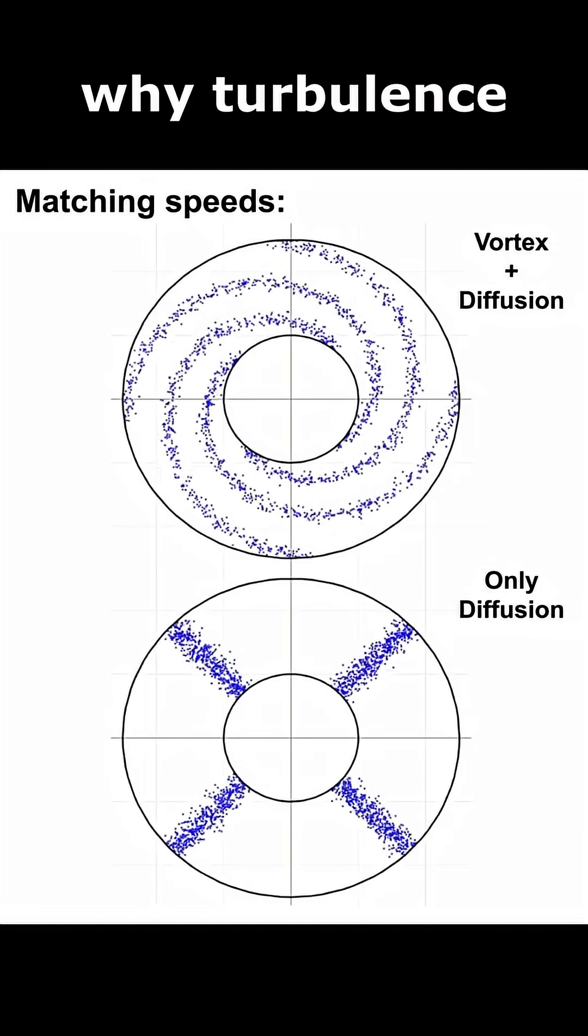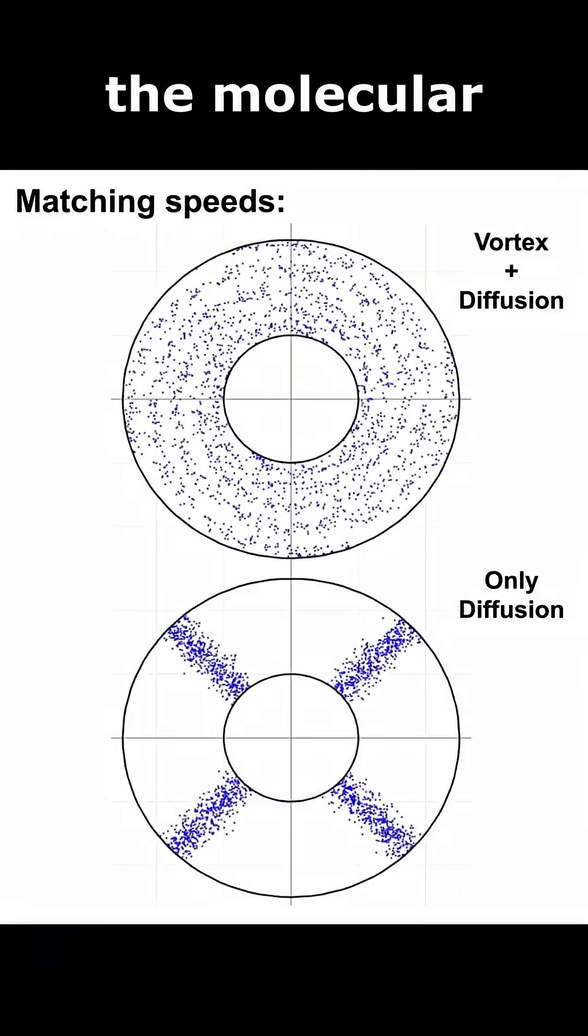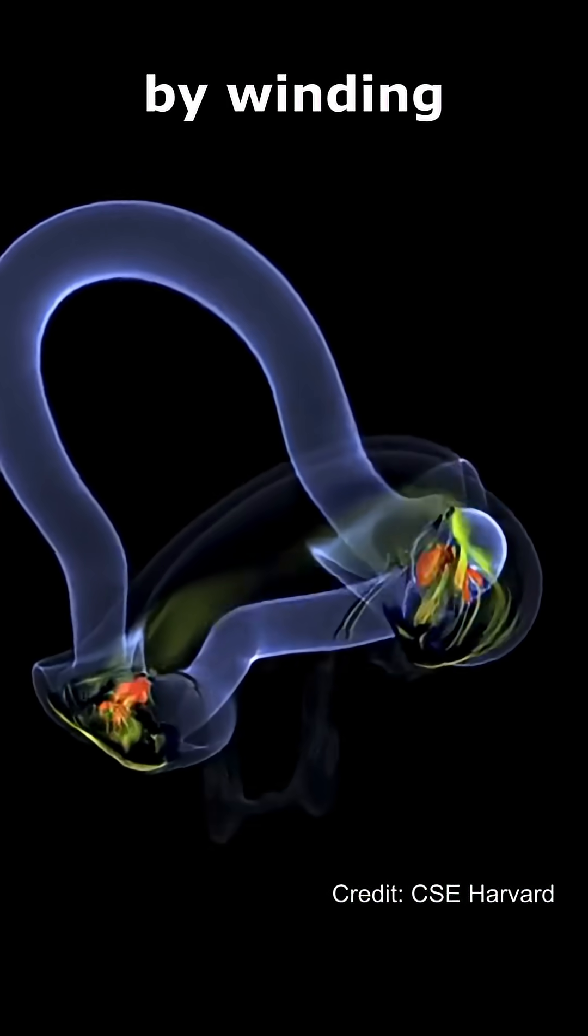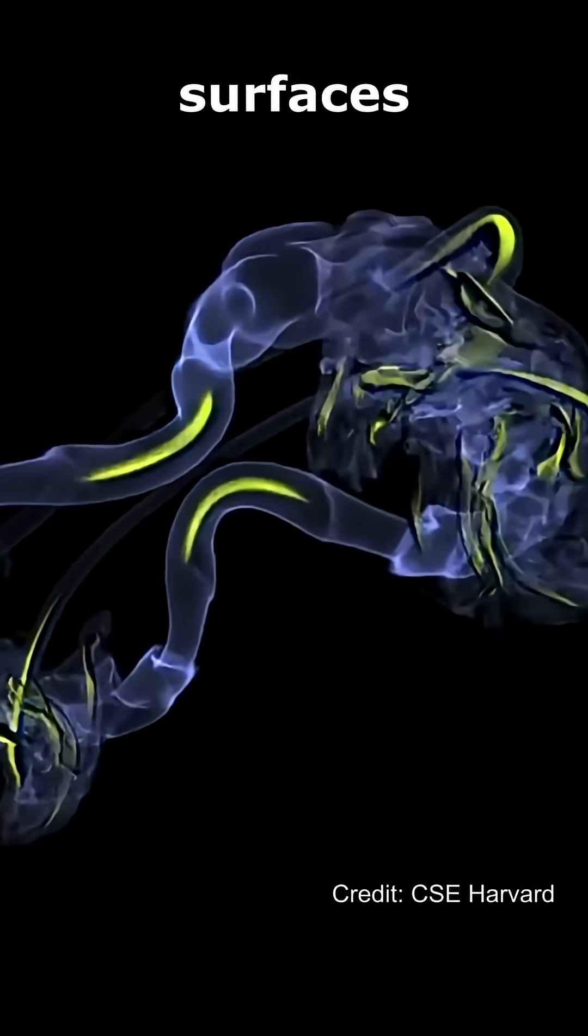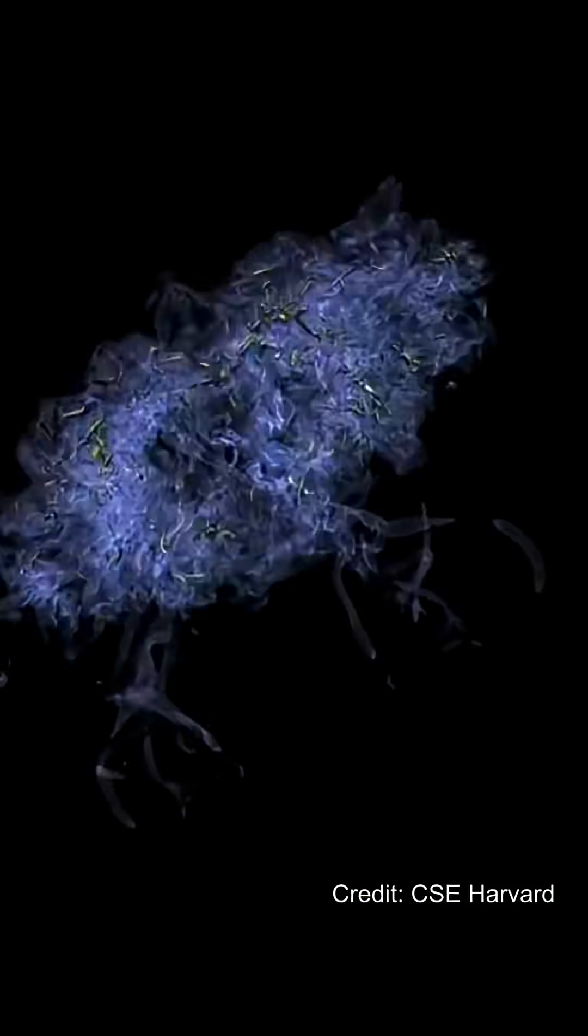So, this is why turbulence is so effective at mixing a fluid, because it greatly enhances the molecular diffusion process by winding and crinkling the internal surfaces of the fluid volume and bringing them microscopically close together. Pretty cool, huh?